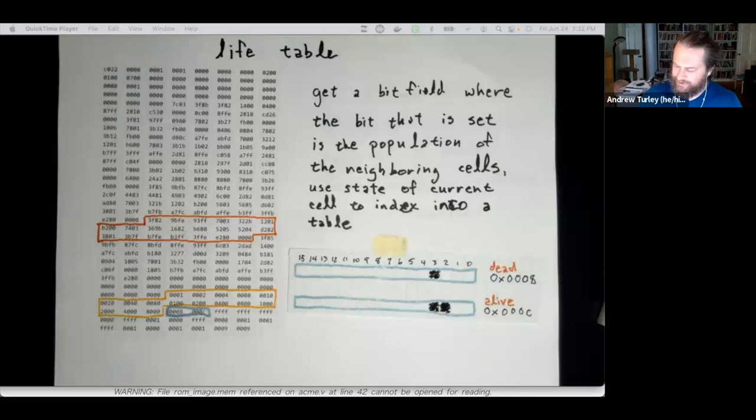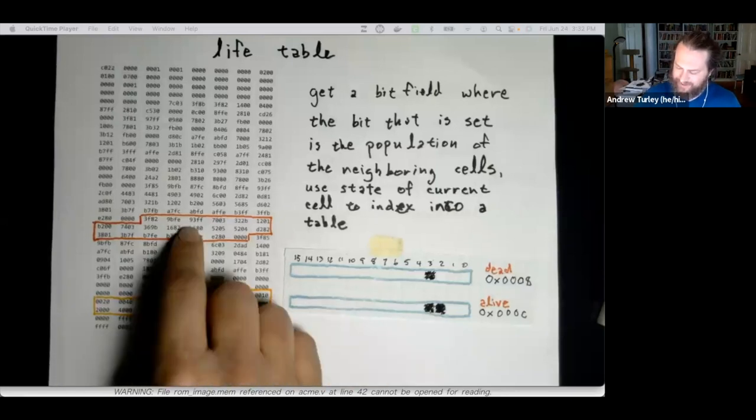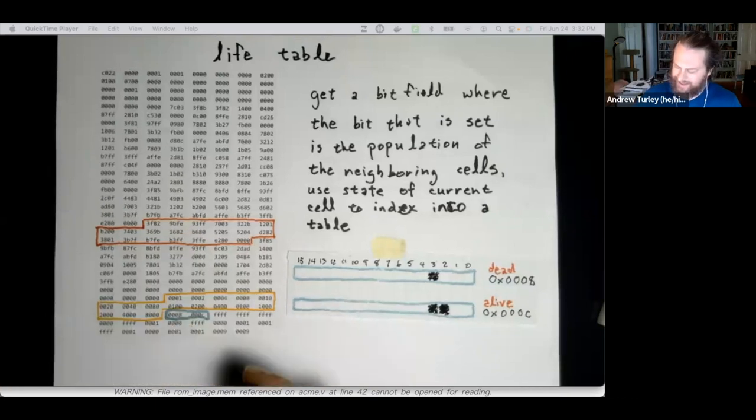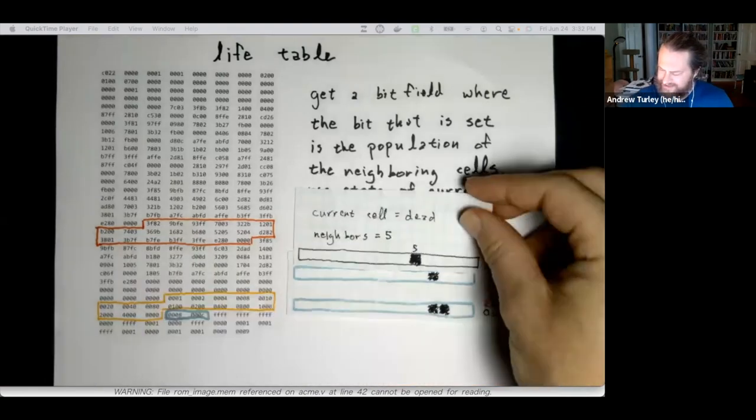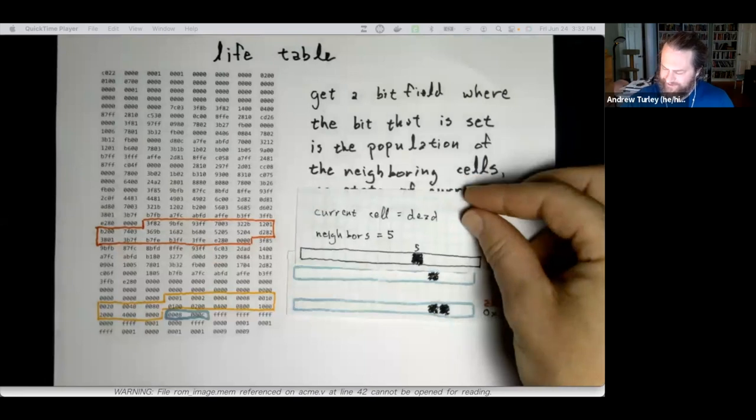So instead, I encoded everything in this bitmap, which exists down here. Here's the code that runs it. Here's the bitmap. And I basically calculate a mask that has one bit set for the cell that's alive. And then I can compare that mask to either the dead or the alive part of the table.